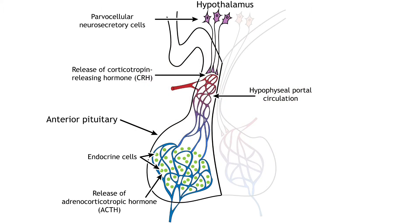The stress response relies on anterior pituitary function. The hypothalamus contains two types of neurons that secrete hormones into the pituitary: parvocellular neurosecretory cells and magnocellular neurosecretory cells.